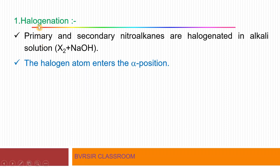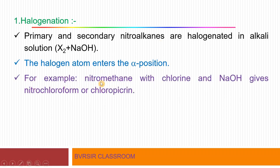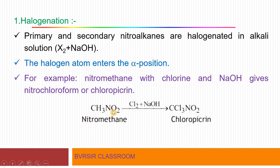Now let us study the chemical reactions of nitroalkanes (nitrohydrocarbons). We will start with halogenation. Primary and secondary nitroalkanes are halogenated in alkaline solution: X2 (halogen) in NaOH solution reacts with primary and secondary nitroalkanes, and the halogen atom enters the alpha position. For example, nitromethane (CH3NO2) reacts with Cl2 and NaOH to give chloropicrin (CCl3NO2), which is a poisonous substance.